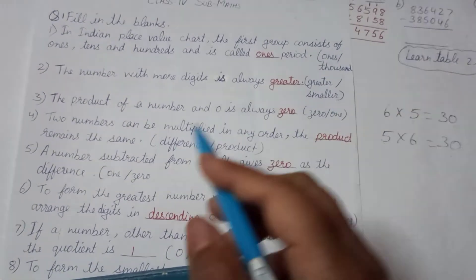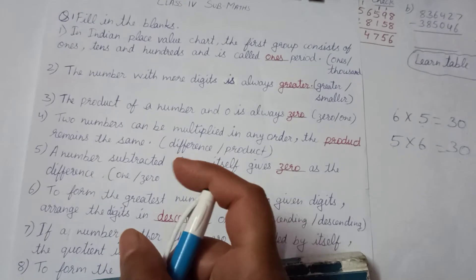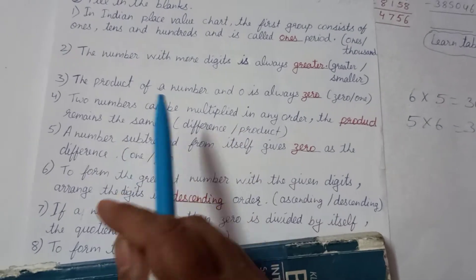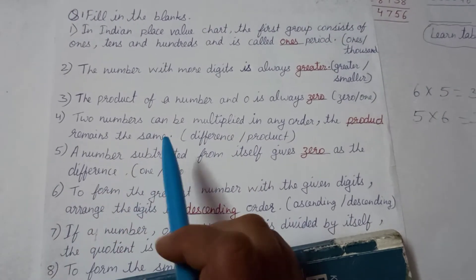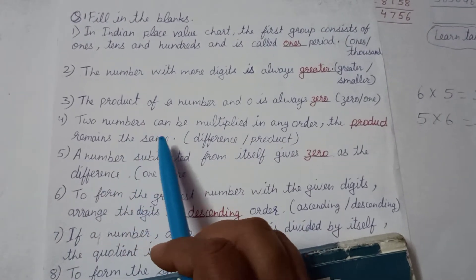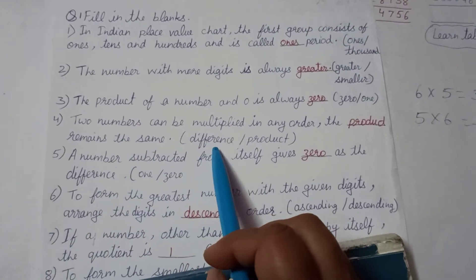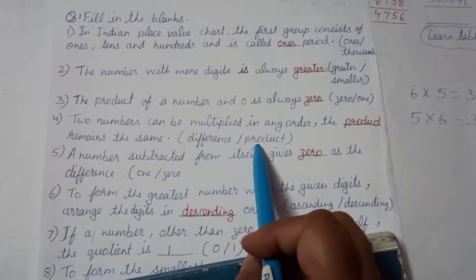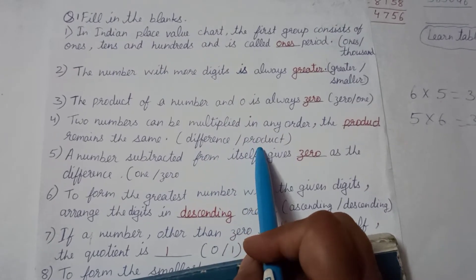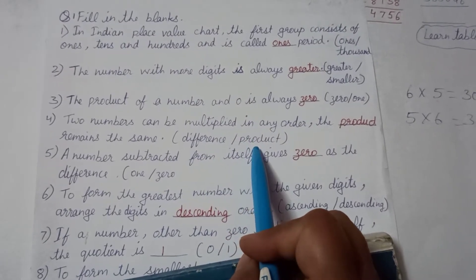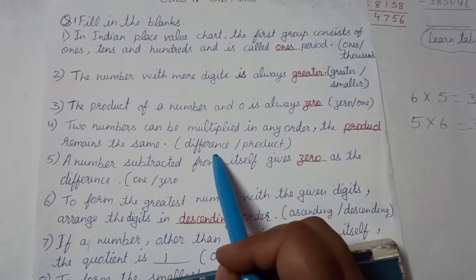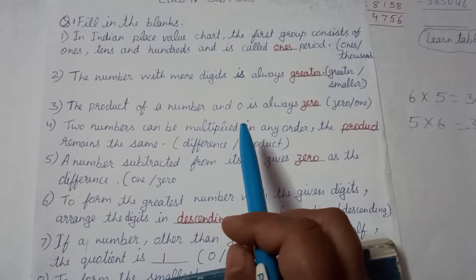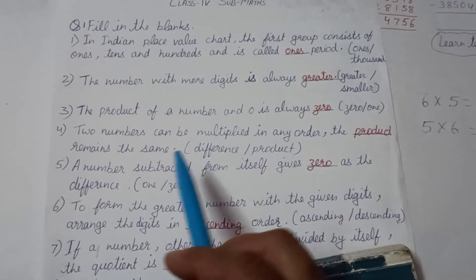You can change the order of multiplication and the answer remains the same. If we change the order, the product will still be the same.